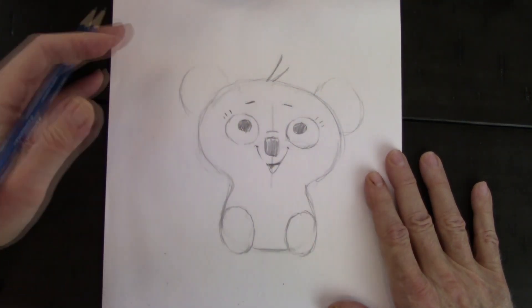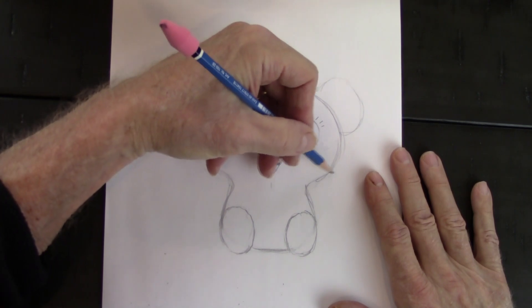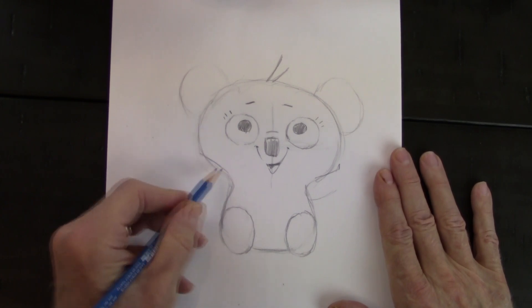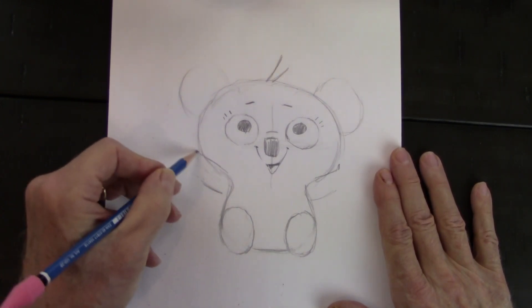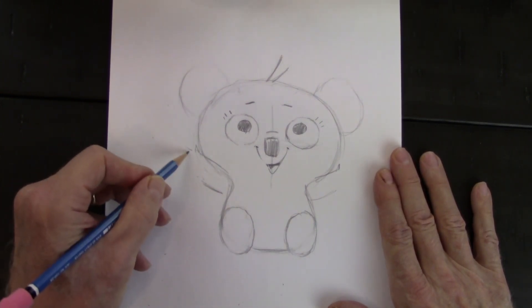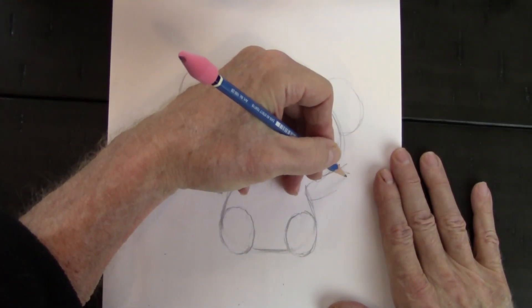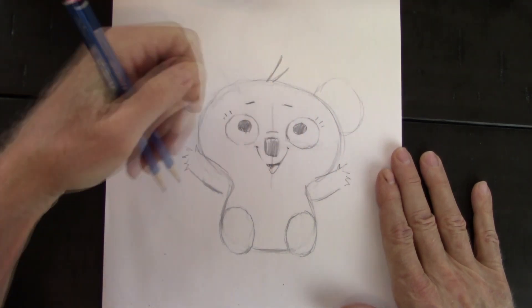And before we just finish up on everything, let's put those arms and get them going. And they're going to reach up. We're going to emphasize the shoulder area and just spread those little paw-like fingers.